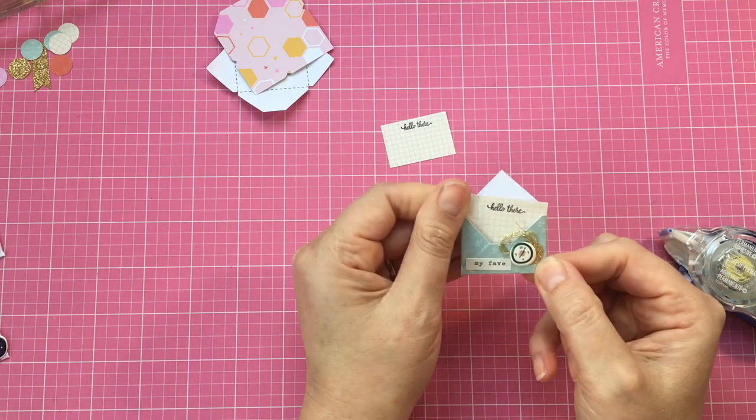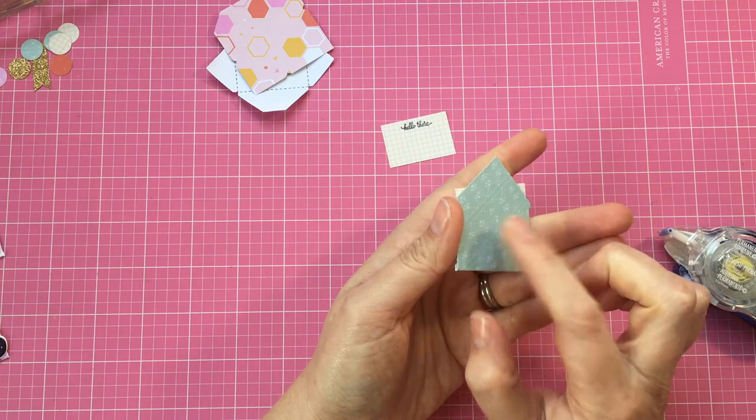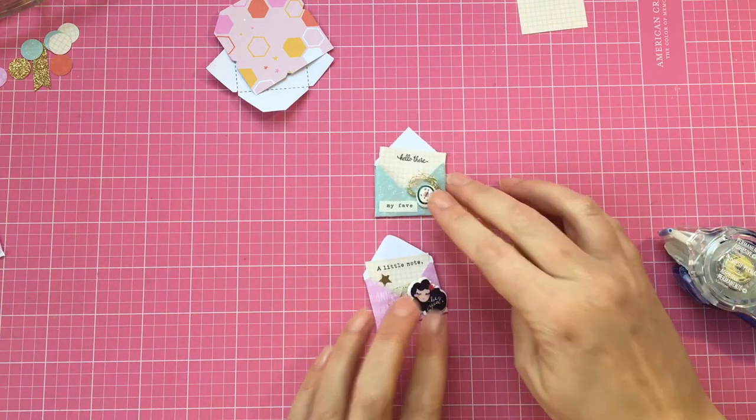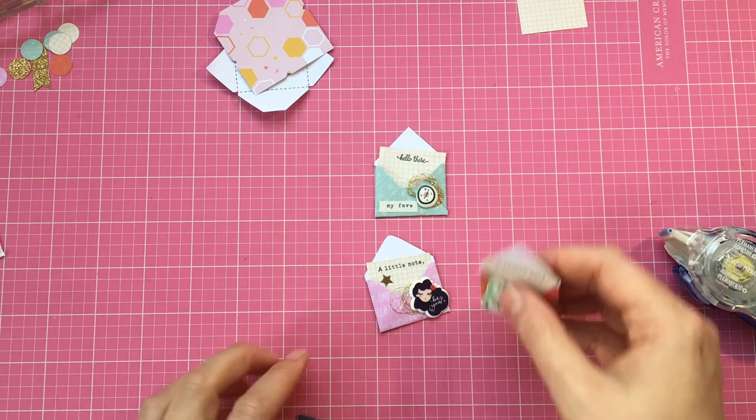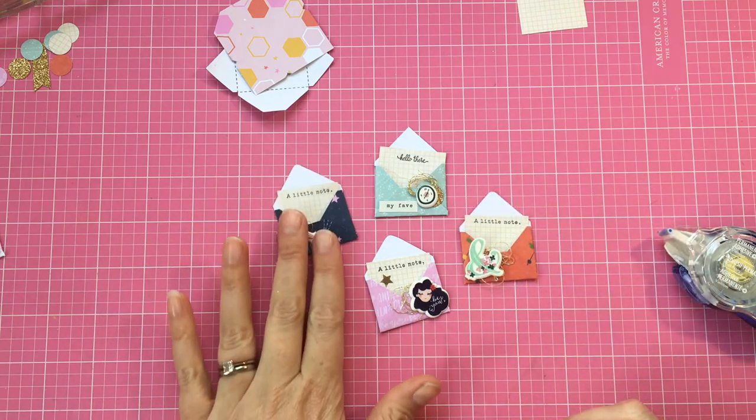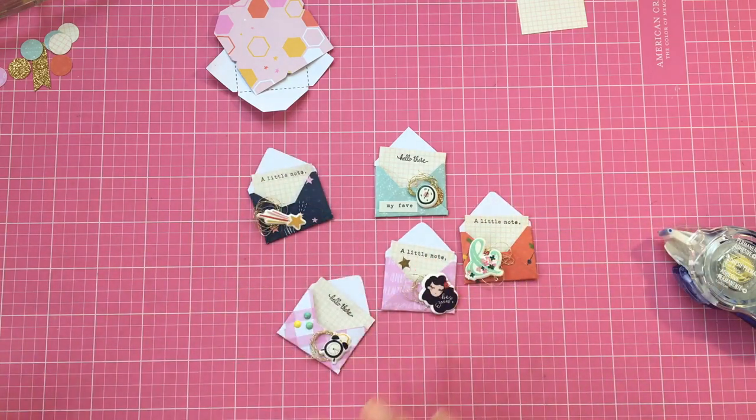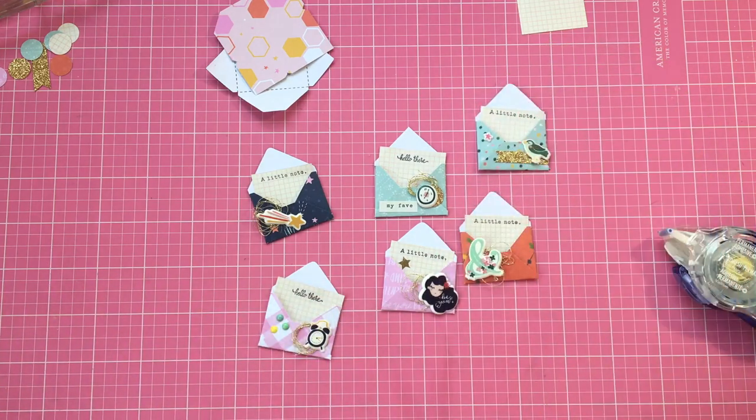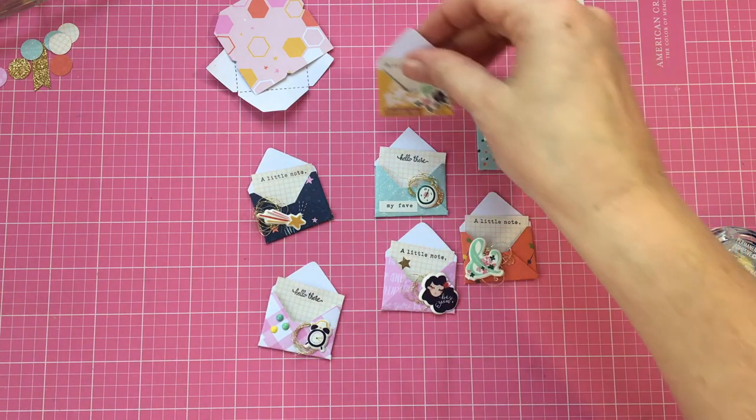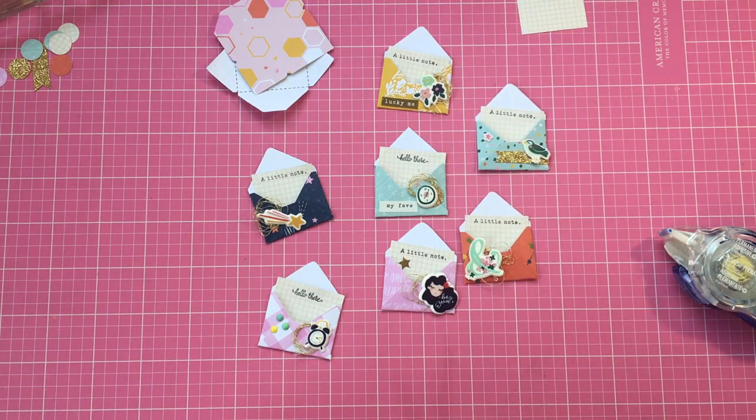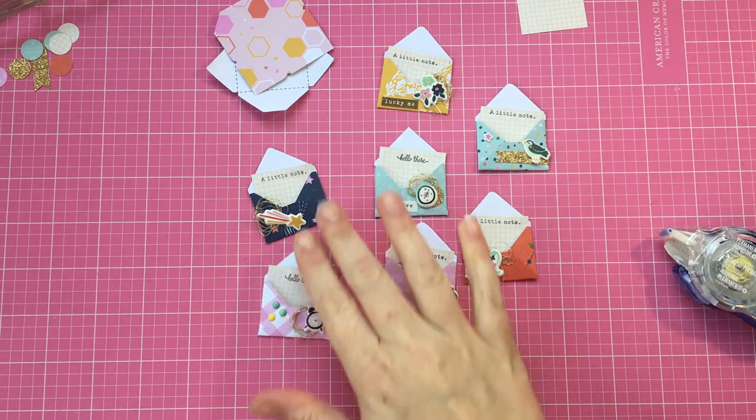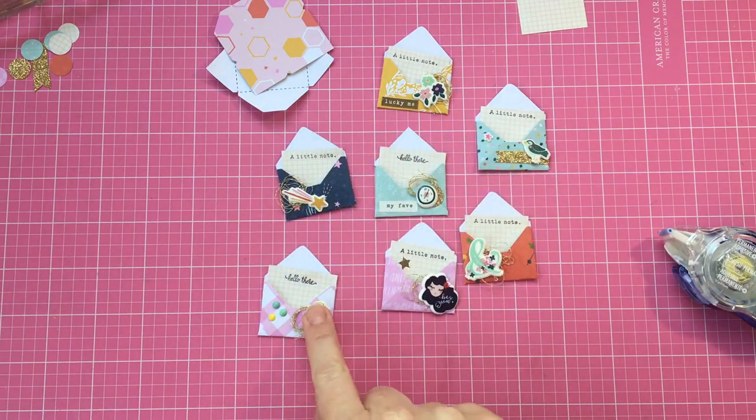But yeah, they're really easy. And then I just usually put a foam dot on the back and then put a few in a little bag or envelope to send to my pen pal. And then you can use it as a decoration on a happy mail, in a pocket letter, or just send them as embellishments for your pen pal to use however they want.